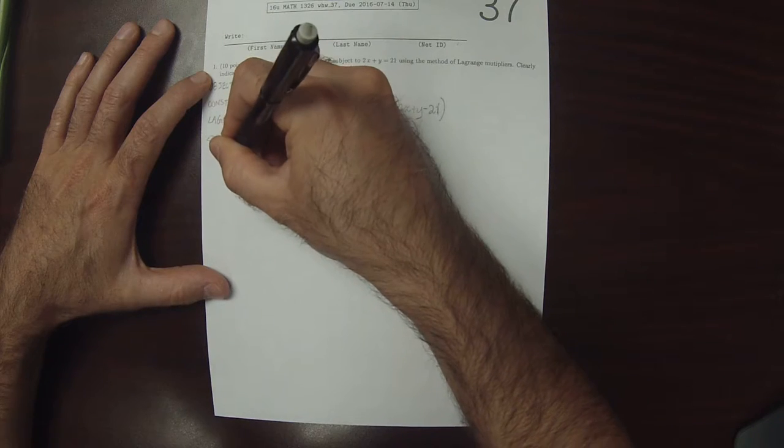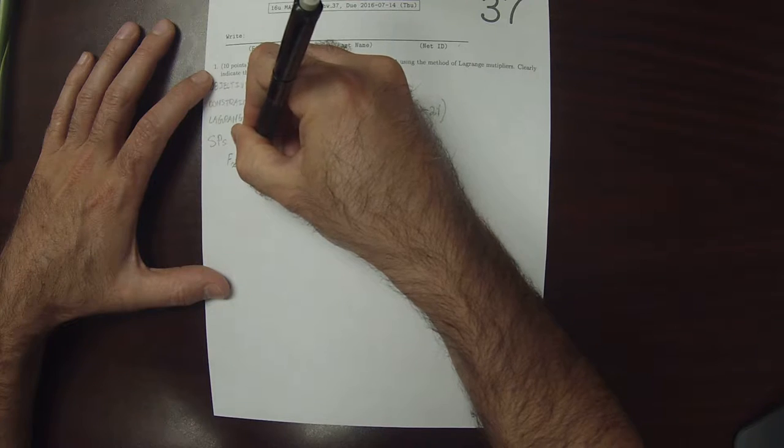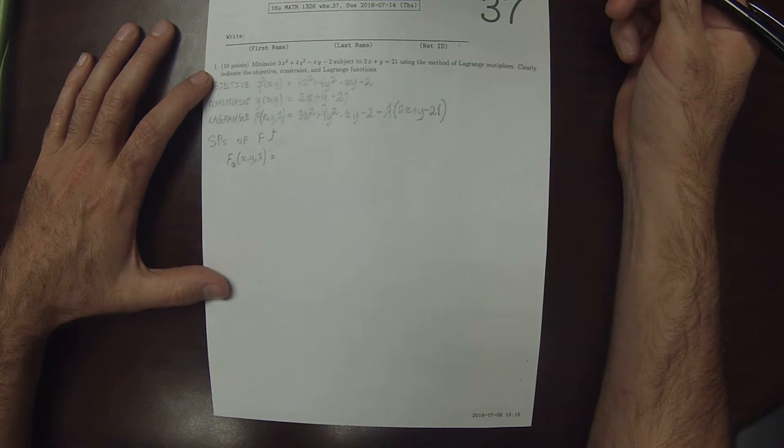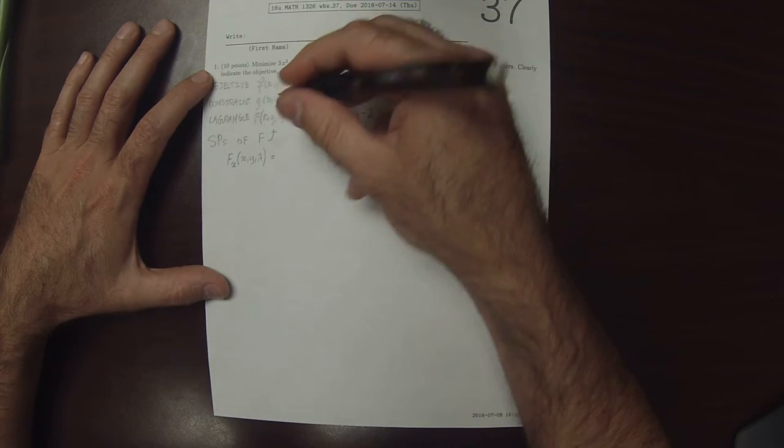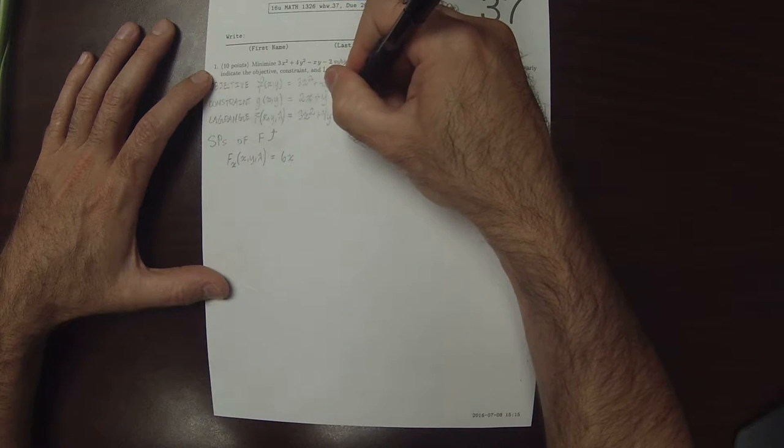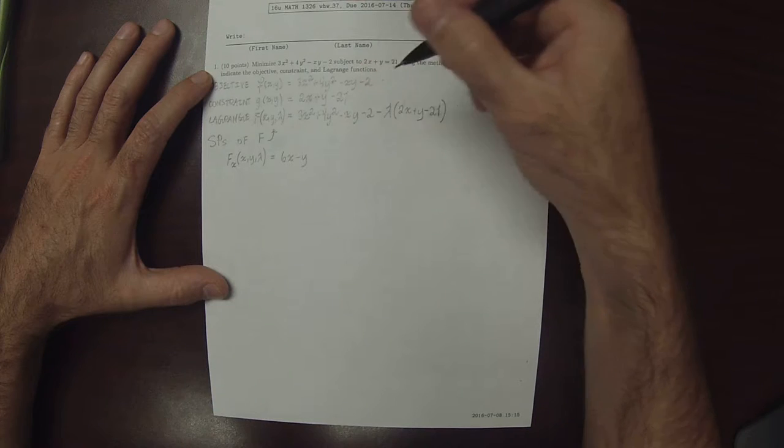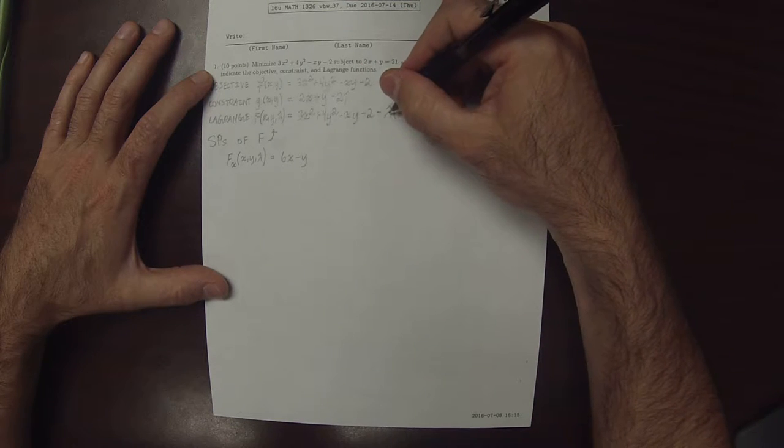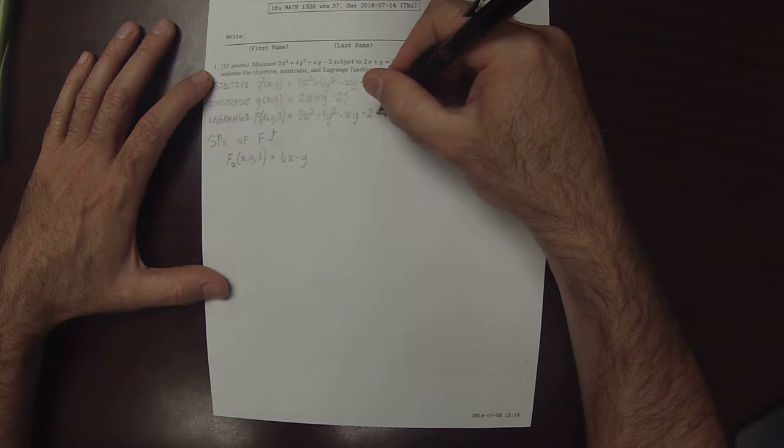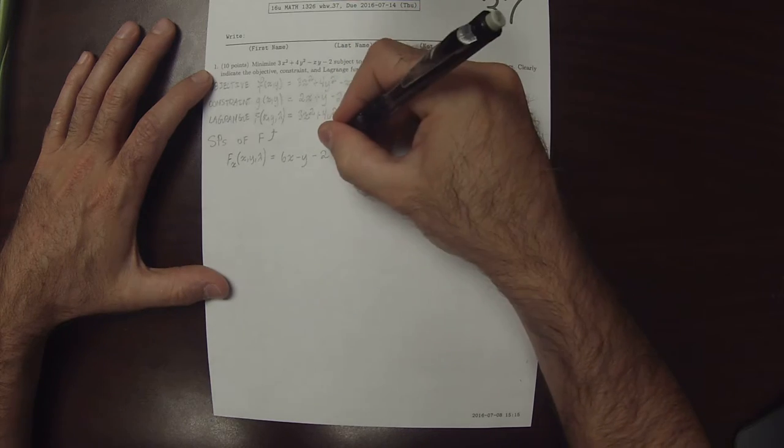So the x partial of big F, that will be 6x and then 0, and then minus y, and then 0. And then this lambda hangs out. Well, the x partial of this is 2, so minus 2 lambda.